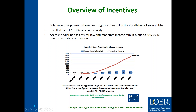We have one program that ended in 2014 called SREC 1, we're currently coming to the end of our second program SREC 2, and we are in development of the next incentive program called the SMART program. We've been highly successful in solar installation in Massachusetts — over 1,700 megawatts of solar capacity. Access to solar is not as easy for low- and moderate-income families due to high capital investment and credit challenges, so we've increasingly focused on expanding access with each successive permutation of our incentive programs.